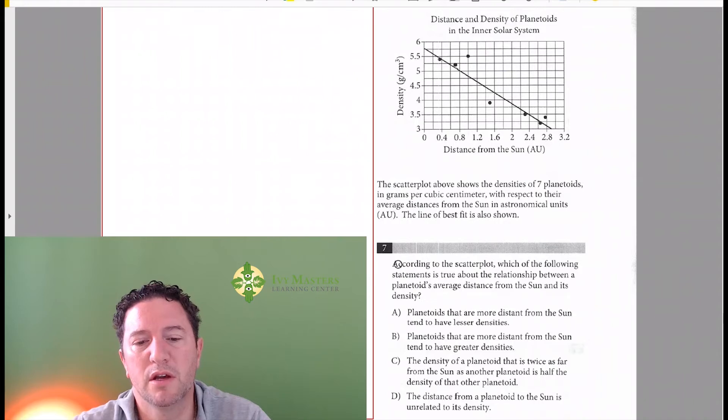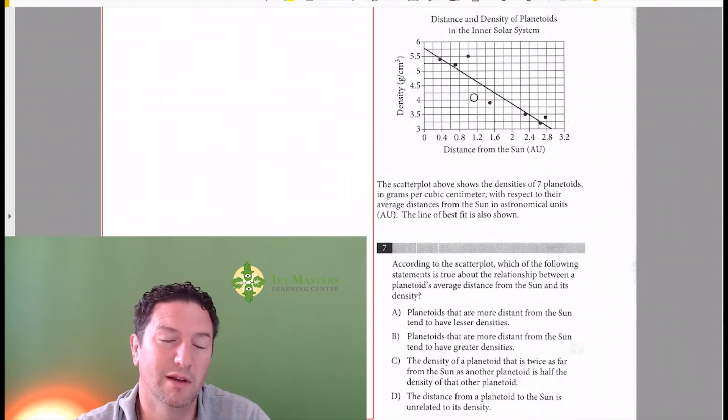Number seven reads: According to the scatter plot, which of the following statements is true about the relationship between the planetoid's average distance from the sun and its density? We see average distance from the sun would be somewhere in the middle, and average density would be somewhere in the middle as well. But let's see what the answer choices are saying.